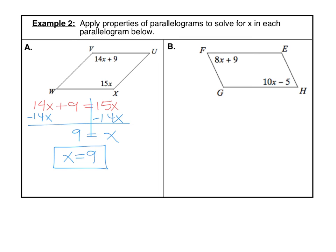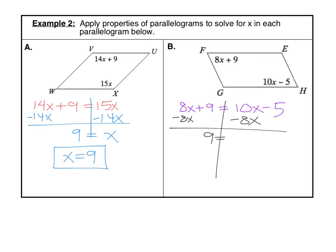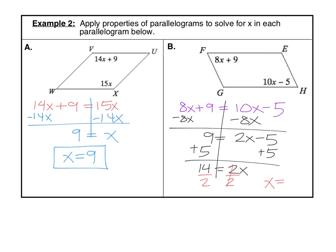In our second parallelogram, angle F and angle H are also opposite, so they're equal to each other. So 8X plus 9 equals 10X minus 5. Move all the X's to one side by subtracting 8X to keep the variable positive. The left side is just 9, and 10X minus 8X is 2X, so 9 equals 2X minus 5. Add 5 to each side to get 14 equals 2X, then divide by 2 to get X equals 7.